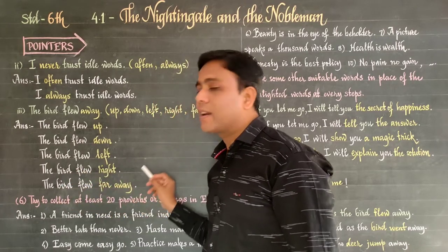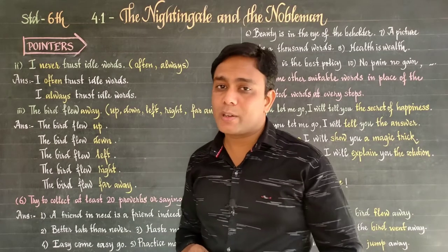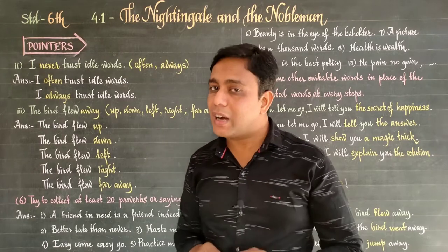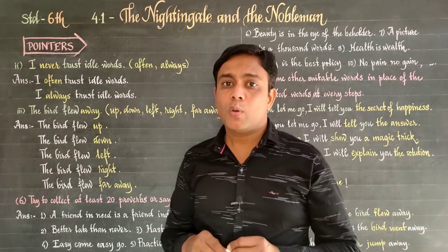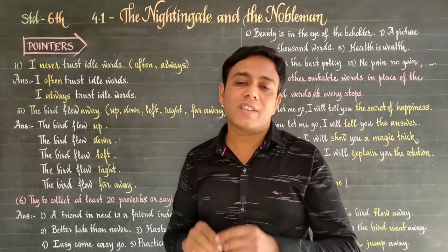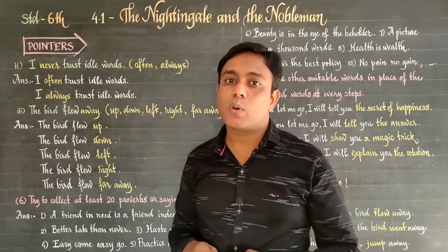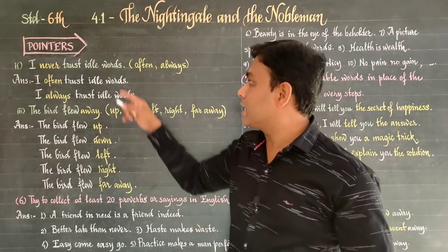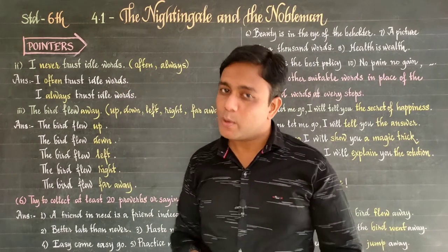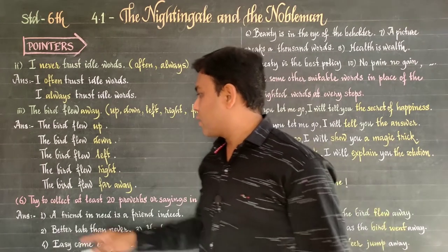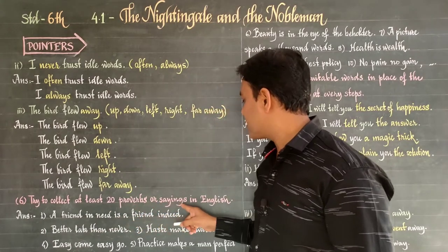The two pieces of advice the Nightingale gave the nobleman are actually English proverbs. Similar proverbs are also said in our mother tongue, so you need to find and write those. Also translate all these sentences into your mother tongue — this is your homework. Question number six: try to collect at least 20 proverbs or sayings in English.